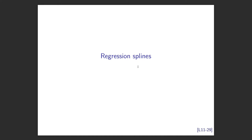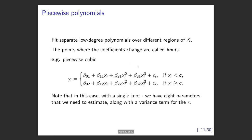We can improve on piecewise constants by fitting a low-degree polynomial in each bin — a piecewise polynomial. For a cubic, each bin gets its own cubic requiring four parameters (intercept, linear, quadratic, cubic coefficient) plus a noise term σ. With two bins you have eight parameters plus σ.